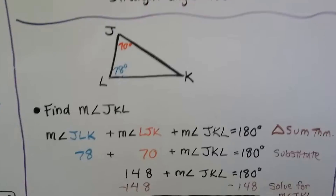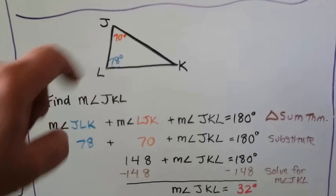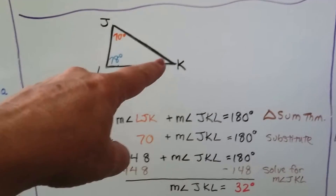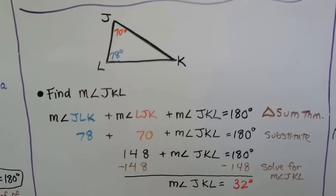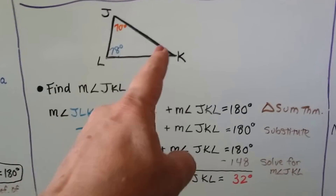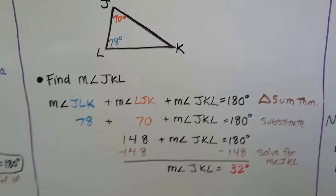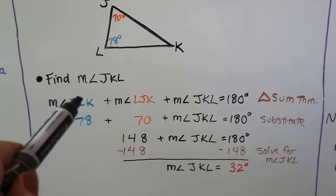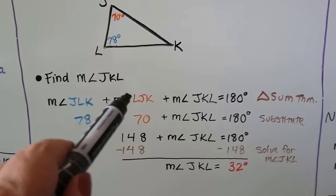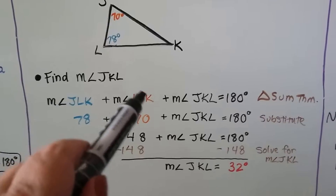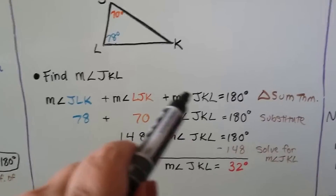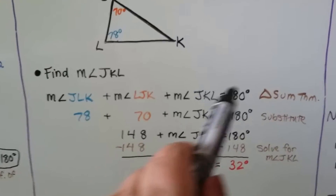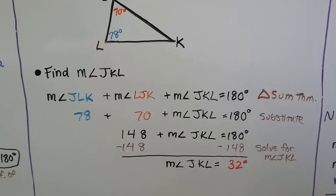Now take a look at this diagram. We have triangle JKL with two angle measures given and one missing — we need to find angle JKL. The measure of angle JLK (the blue one) is 78 degrees, plus the measure of angle LJK (the 70-degree one), plus the missing angle JKL should equal 180 degrees because of the Triangle Sum Theorem.